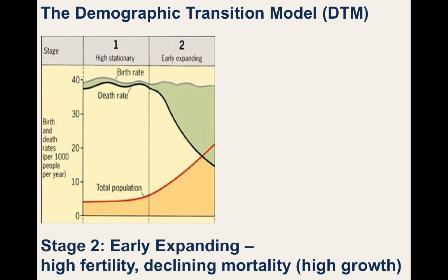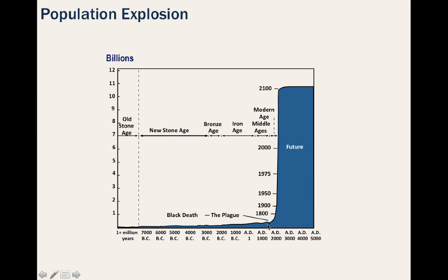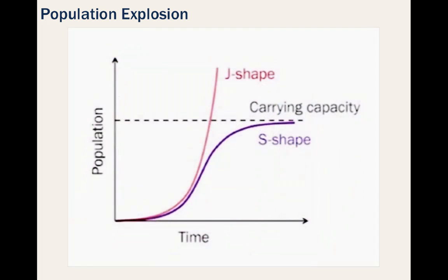To understand how revolutionary the Industrial Revolution actually was, just look at how slow human population growth was over time, and then see how dramatically human population has expanded ever since. Looking at this growth, we refer to this as the J-curve, since the growth pattern resembles the letter J.